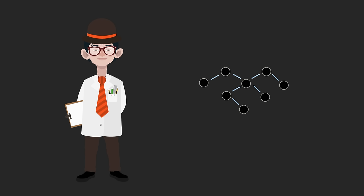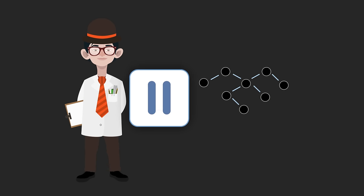Look carefully — there are eight carbon atoms, so it is a structural isomer of octane. But what is its formal name? Pause and count the atoms in the longest chain.